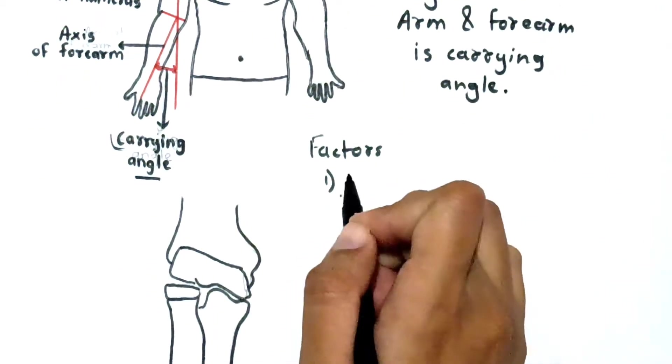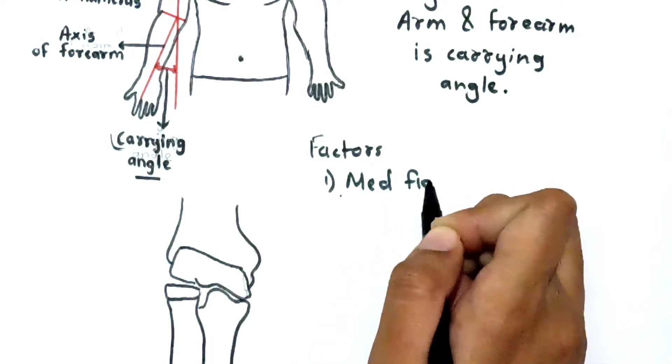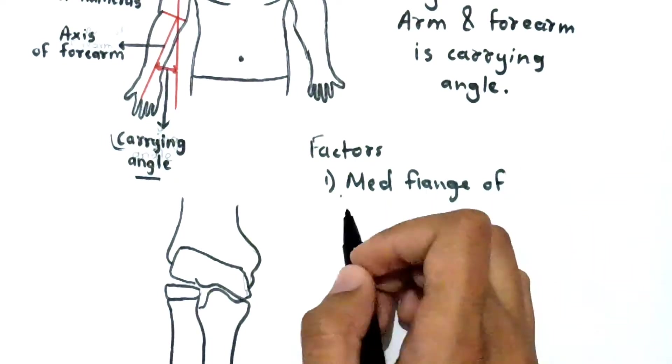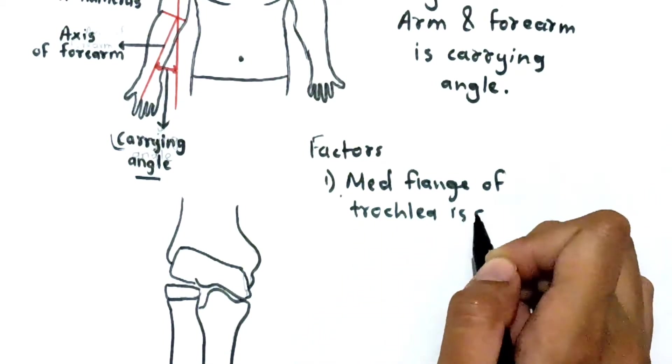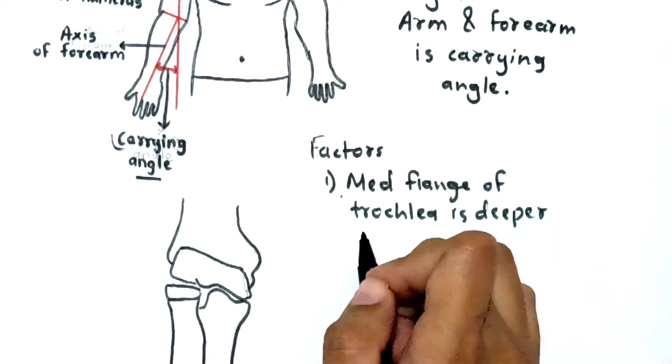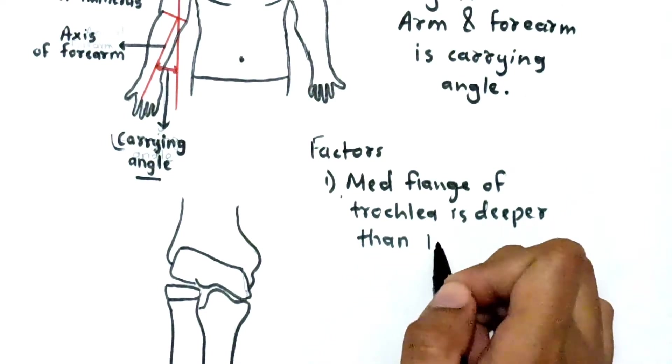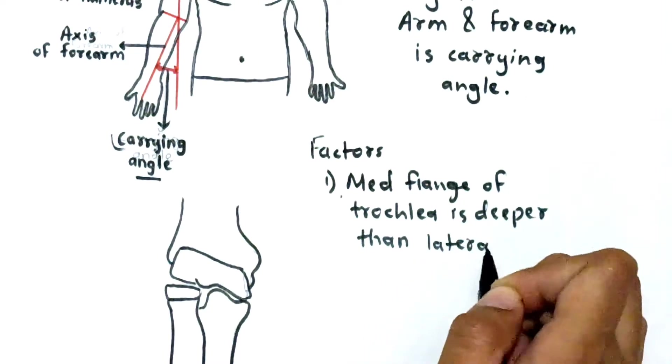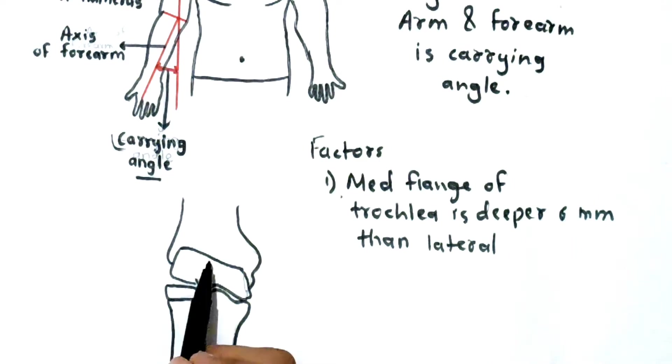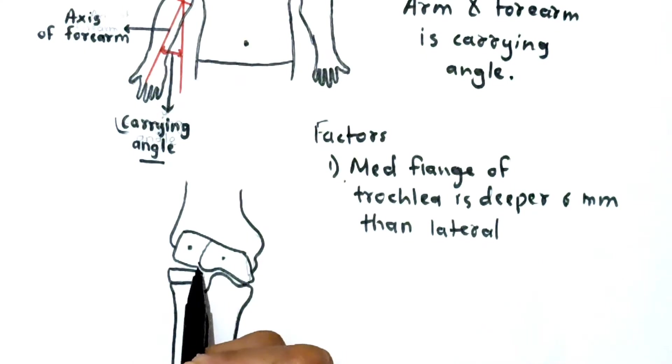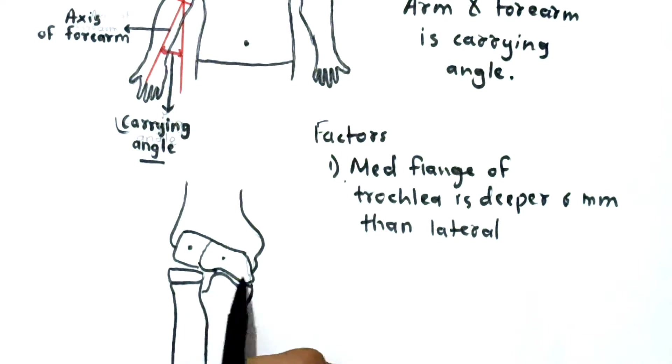The factors are: the medial flange of trochlea is deeper than lateral one. So the medial flange of trochlea, this is the trochlea, this capitulum, this is trochlea. This medial flange of your trochlea is deeper as compared to this lateral flange. That's why this medial side of your ulna bone gets more deeper.